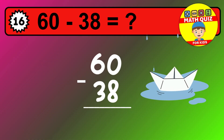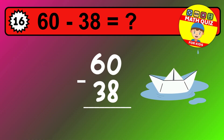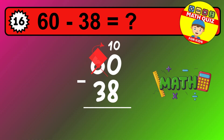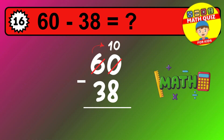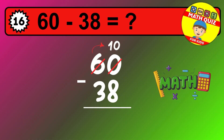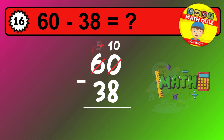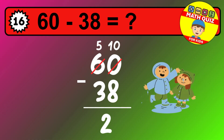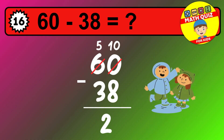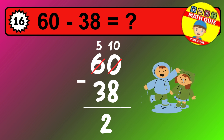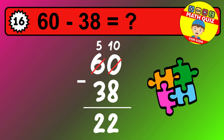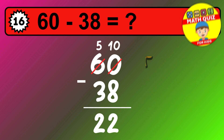Let's solve this step by step. We start with the units. 0 minus 8 is not possible, so we need to regroup. We take one 10 from the tens column. Now we have five tens and the units become 10. Now we subtract. 10 minus 8 is 2. Then we go to the tens. 5 minus 3 is 2. The final answer is 22.